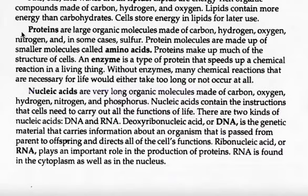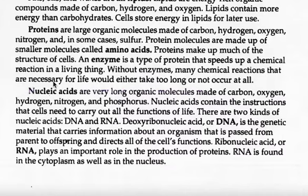Proteins are large organic molecules made of carbon, hydrogen, oxygen, nitrogen, and in some cases, sulfur. Protein molecules are made up of smaller molecules called amino acids. Proteins make up much of the structure of cells. An enzyme is a type of protein that speeds up a chemical reaction in a living thing. Without enzymes, many chemical reactions that are necessary for life would either take too long or not occur at all.